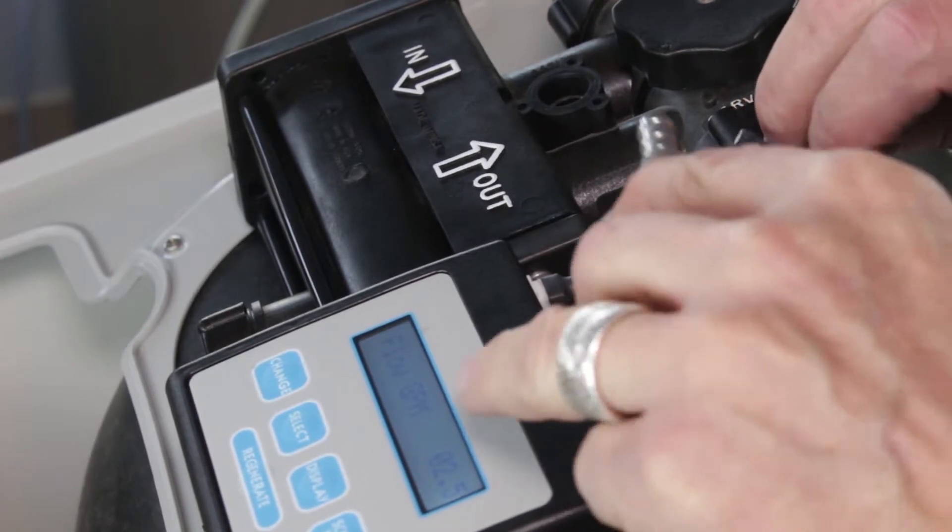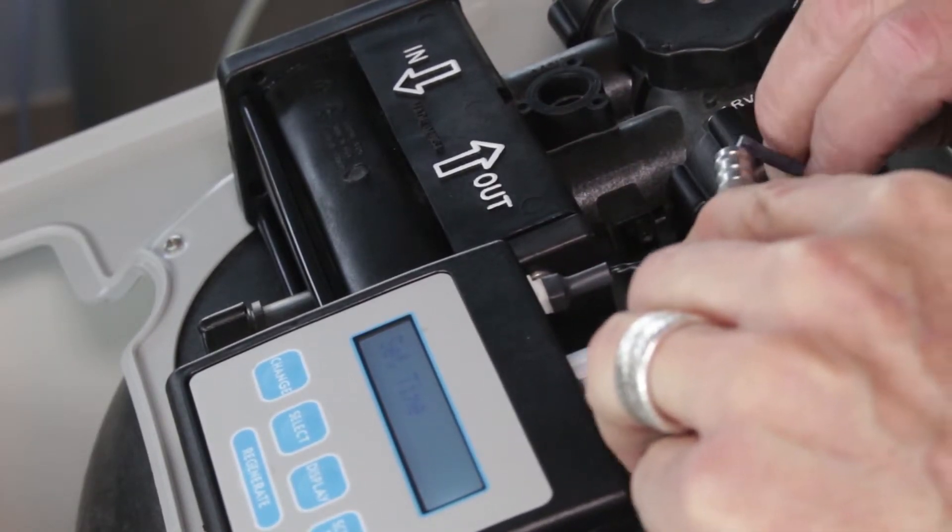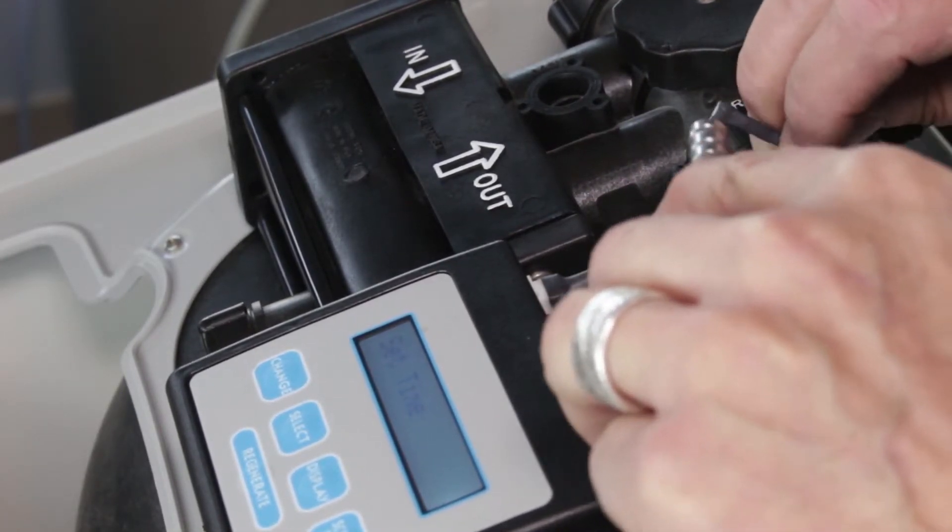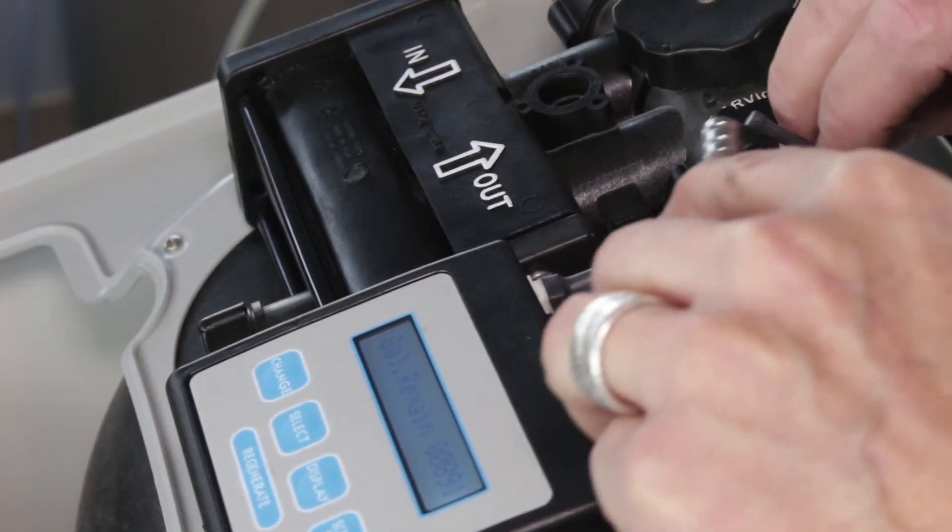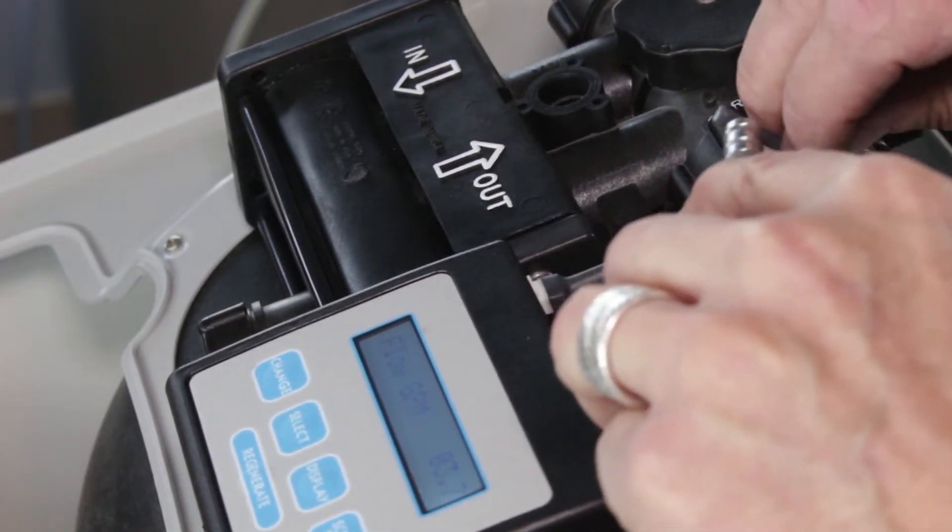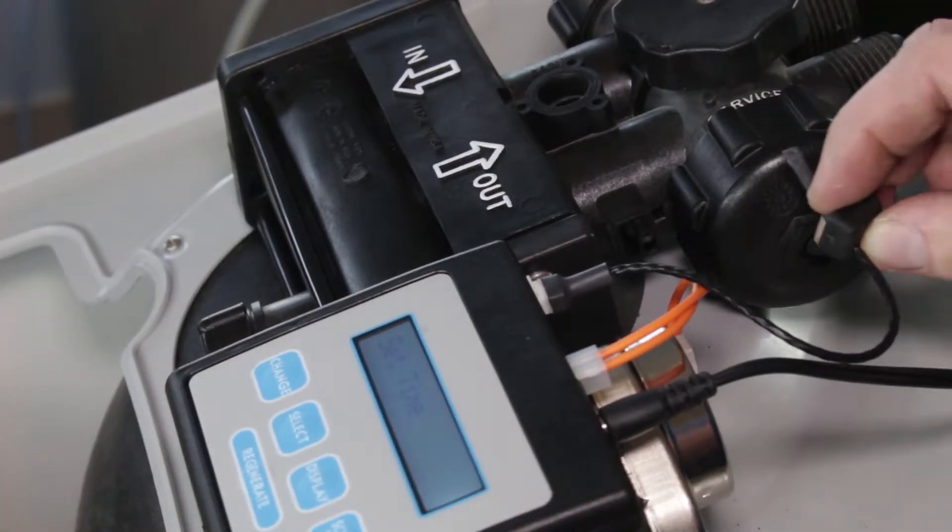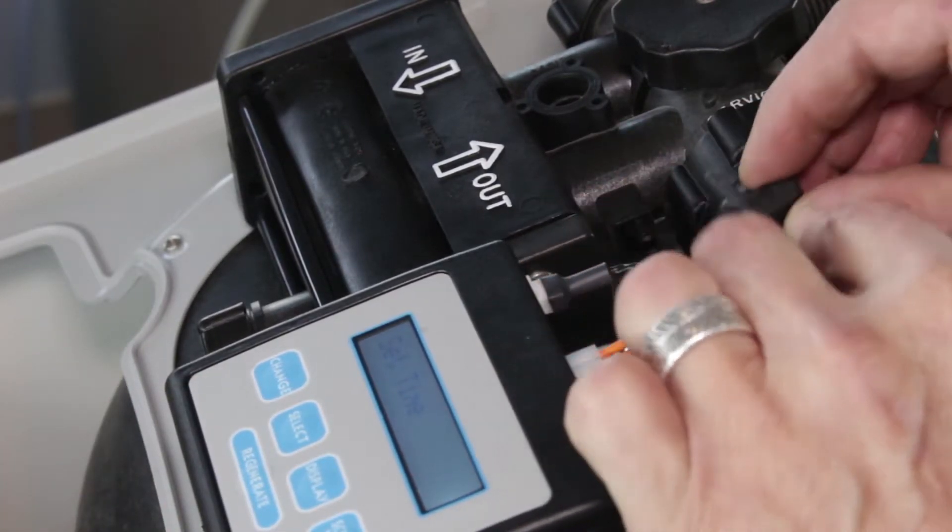And you'll see on the controller it shows flow in gallons per minute now. And so that tells you that the flow sensor is working correctly. If you don't get any reading there then I would replace the flow sensor.